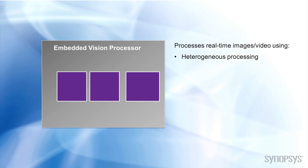To support both control and extensive math processing, embedded vision processors are designed with a heterogeneous architecture. In other words, for power efficiency, they include different processing units to perform different tasks.